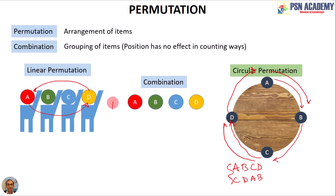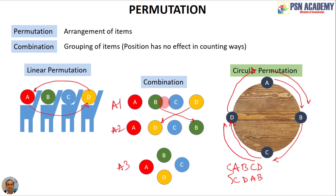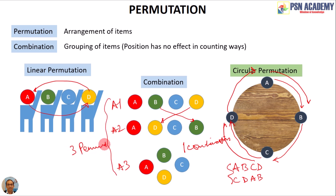Now for combination with four items: arrangement A1 has all four items, arrangement A2 has them rearranged, and arrangement A3 is yet another rearrangement. In every arrangement all four items are involved — the same items are used in all three arrangements. Since the same items appear in all three, there is only one combination but three arrangements, and those three arrangements are three permutations.